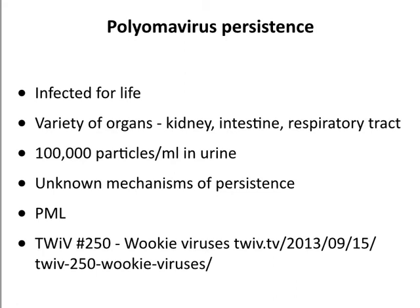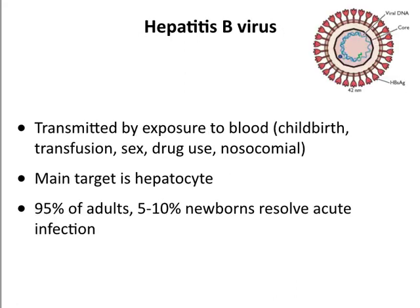Personally, I feel these polyomaviruses are probably beneficial in some way—similar to the gut microbiome. One day broad-spectrum antivirals may let us test this. Next: hepatitis B virus, which we discussed earlier in terms of reverse transcription. This is a DNA virus with a gapped double-stranded DNA genome and a piece of RNA attached, and it's enveloped.